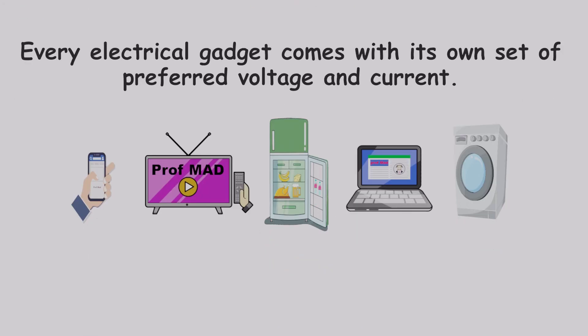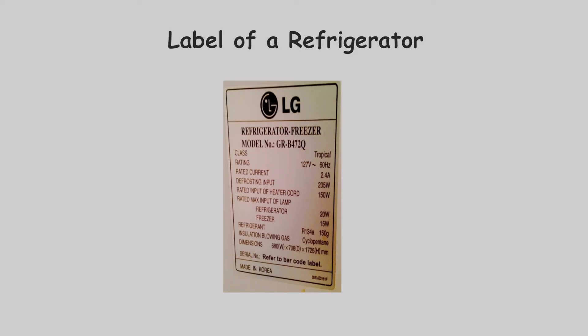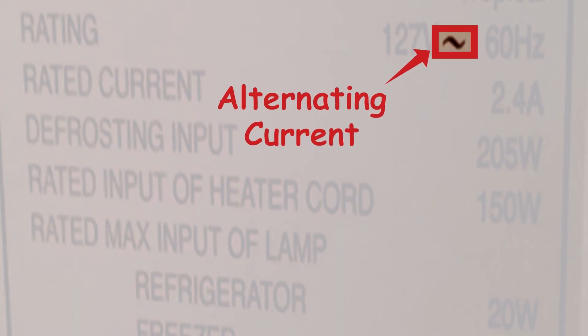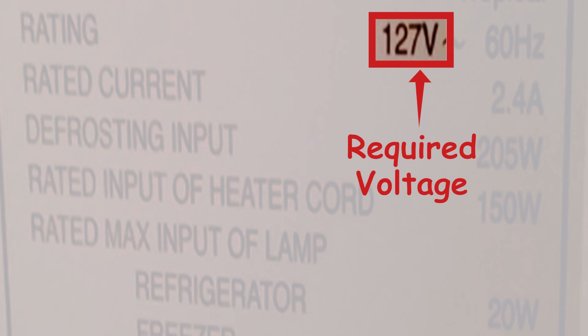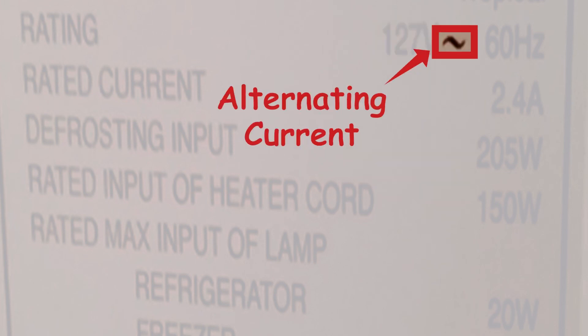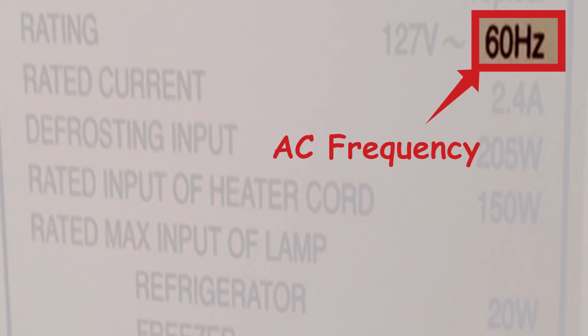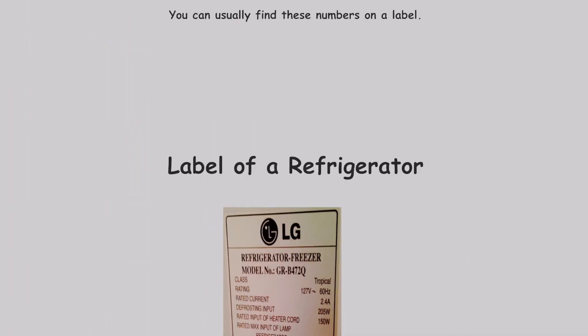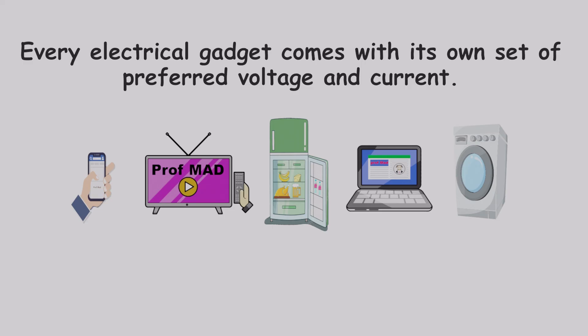Every electrical gadget comes with its own set of preferred voltage and current. You can usually find these numbers on a label. For an example, here is a label for a refrigerator. Let's see what the label says about the refrigerator. This symbol indicates it should be powered using alternating current. The voltage level should be about 127 volts to work properly. Since it's AC, the frequency should be about 60 hertz. That means the current changes its direction 60 times per second. Here it says it needs at least 2.4 amperes to work at maximum performance.